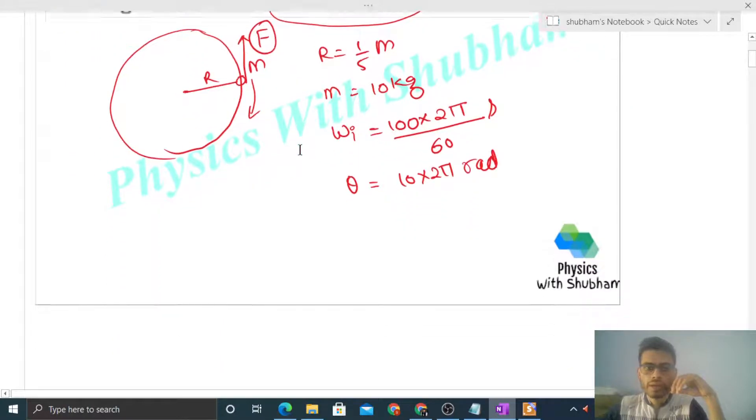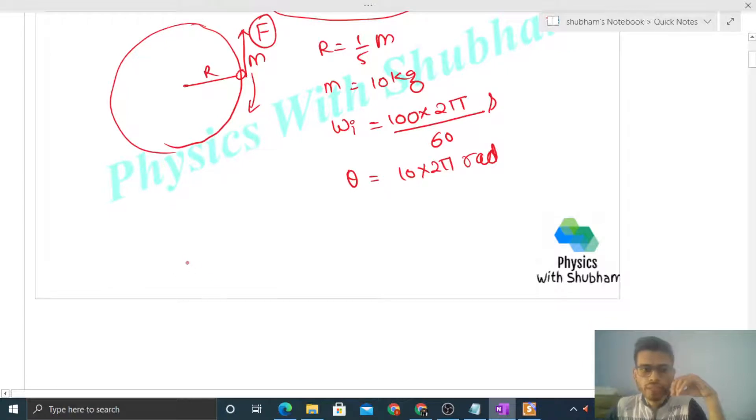So to solve this problem we have two methods. Let's say method 1 is by using work-energy theorem in rotational kinematics. It says that work done by all the torques is equal to change in rotational kinetic energy of the wheel, or delta K.